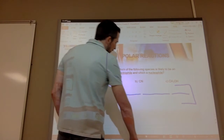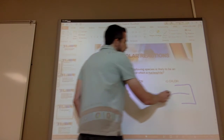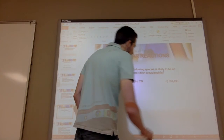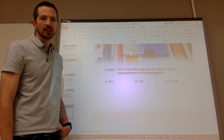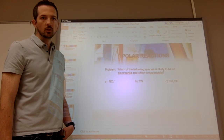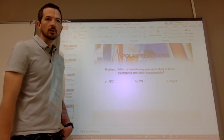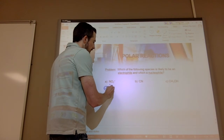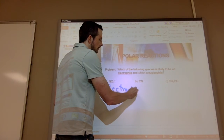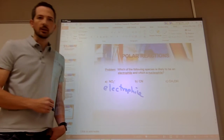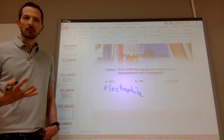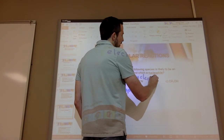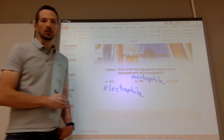Let's look at this example: which of the following species is likely to be an electrophile, and which a nucleophile? Zn2+ has a positive charge, so it's deficient in electrons — that's going to be an electrophile. Next, CN minus has a minus charge — pretty easy — it has extra electrons, so that's going to be my nucleophile. Anytime in organic chemistry you see NaCN written out, the CN carries a minus charge.